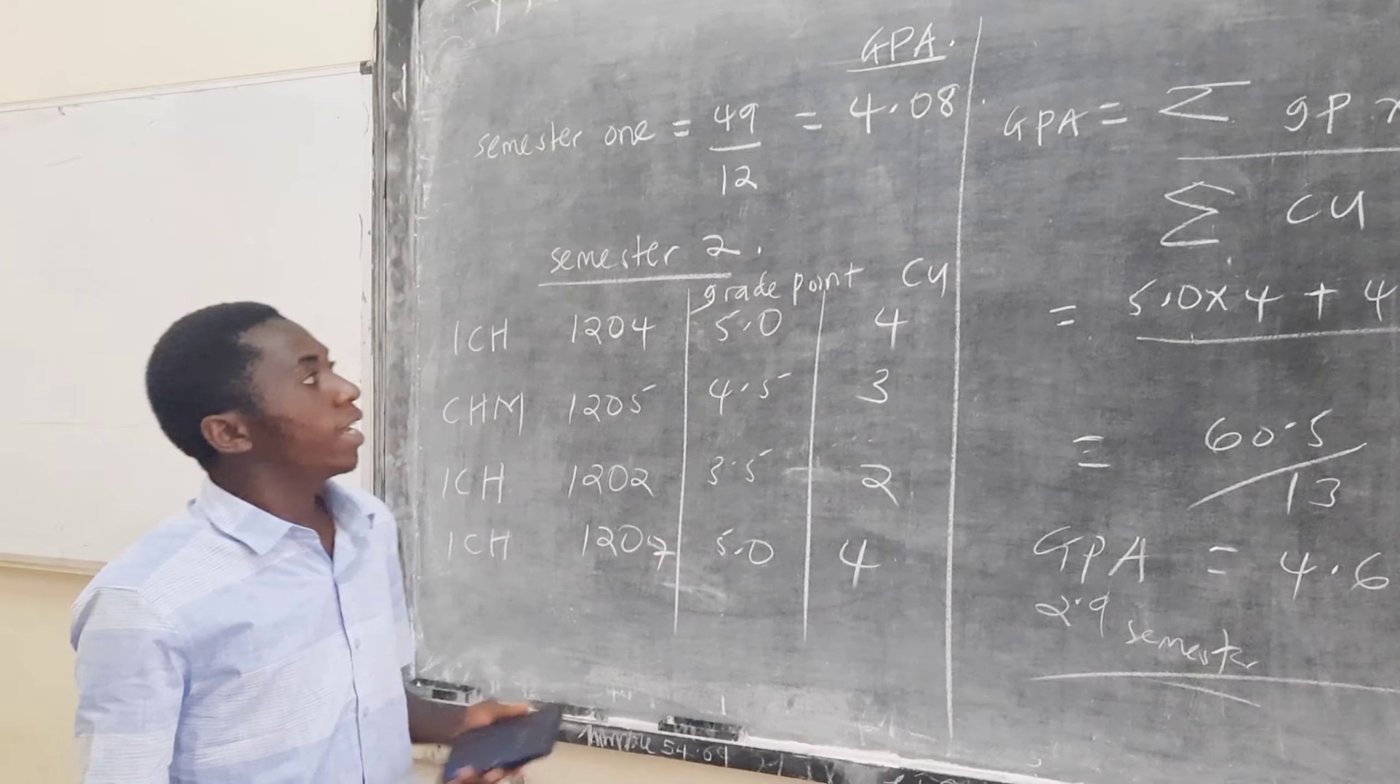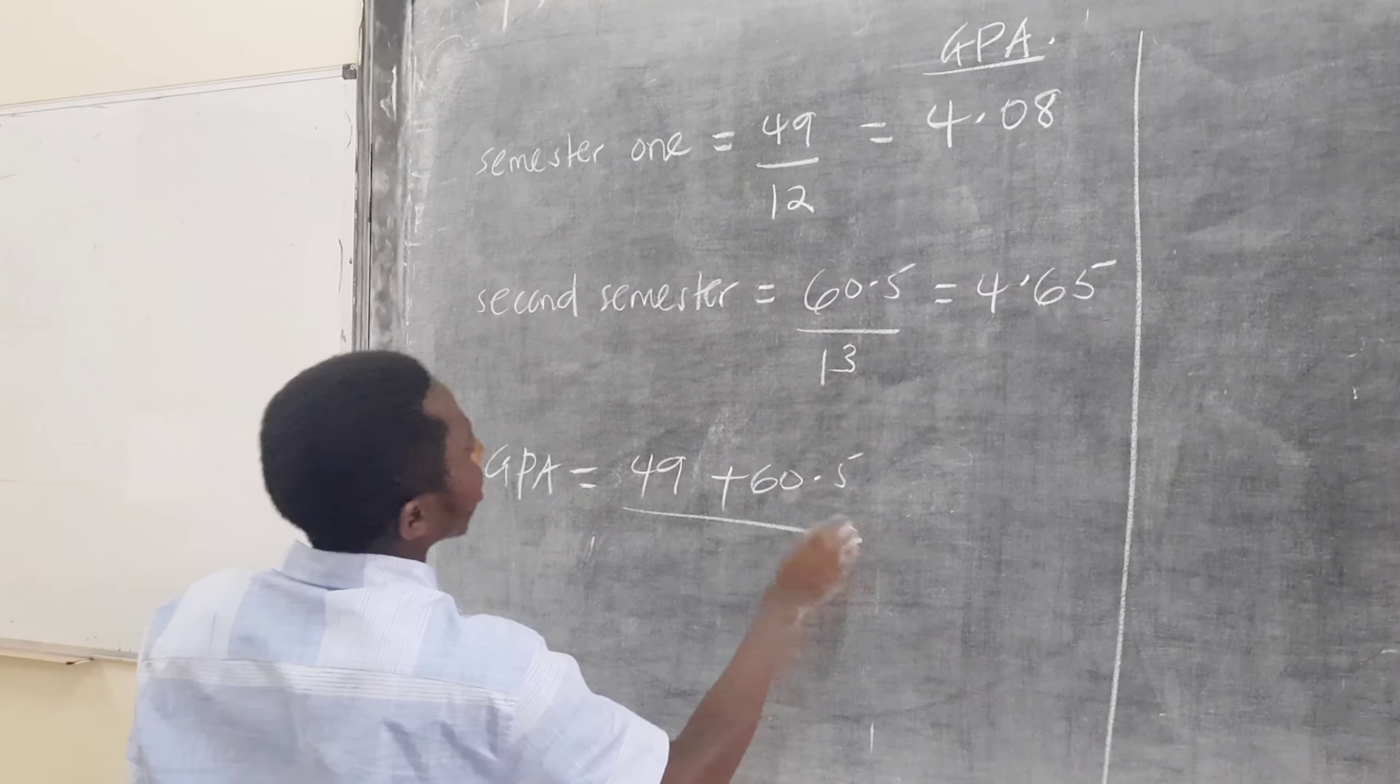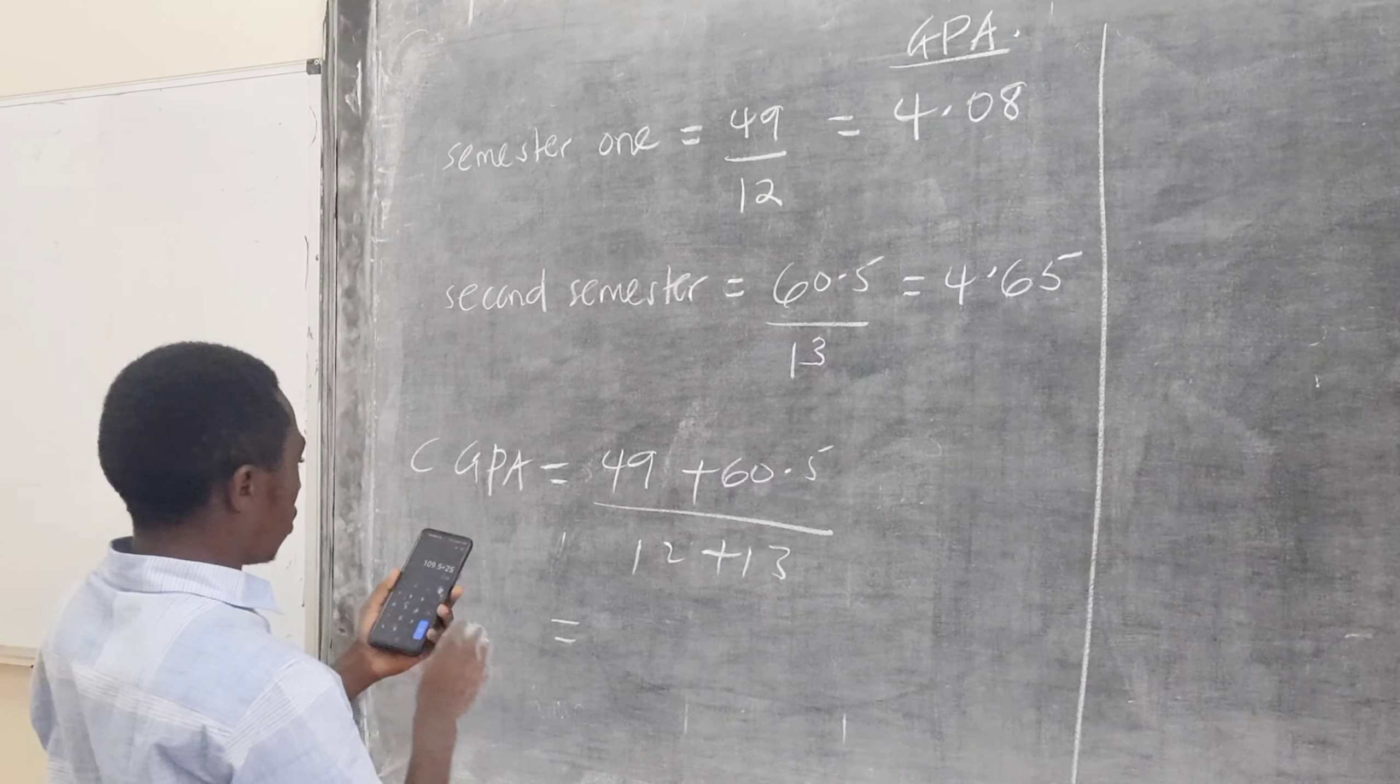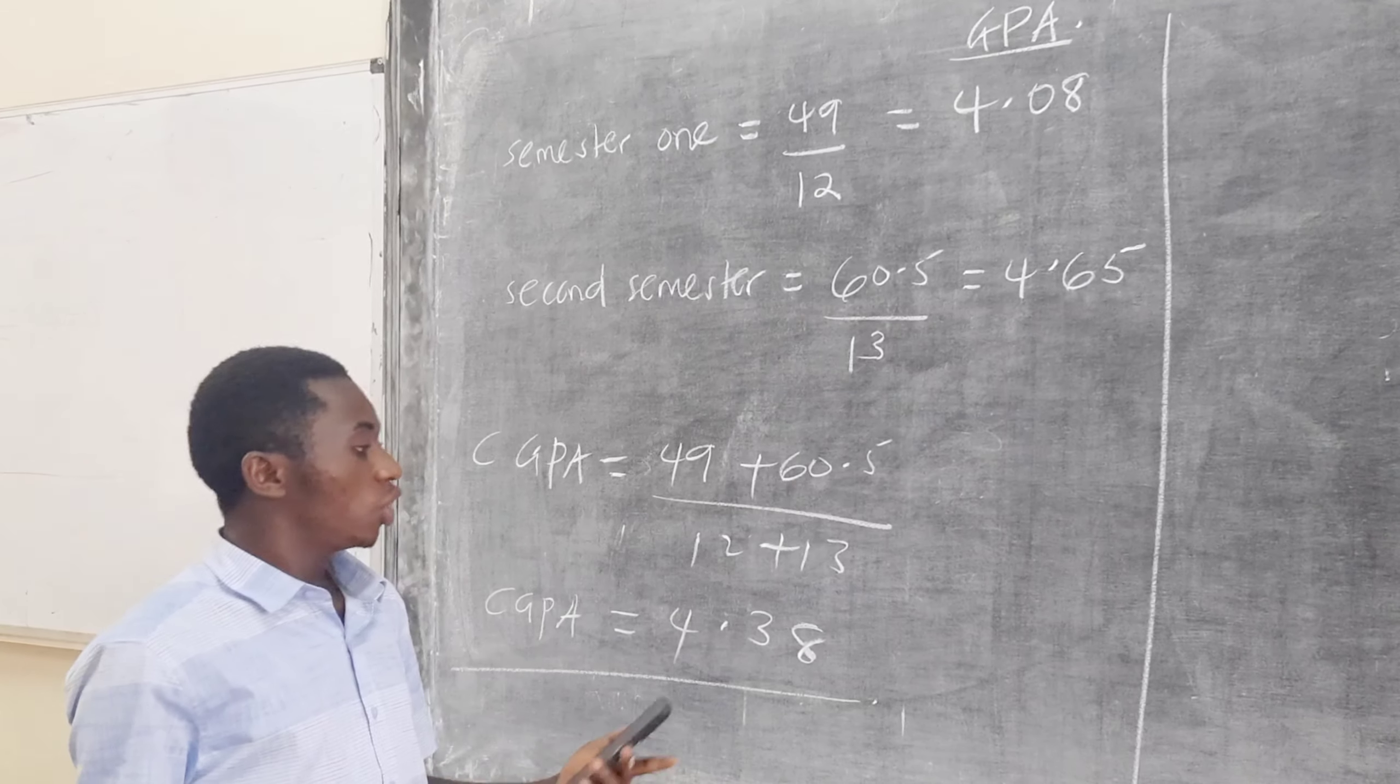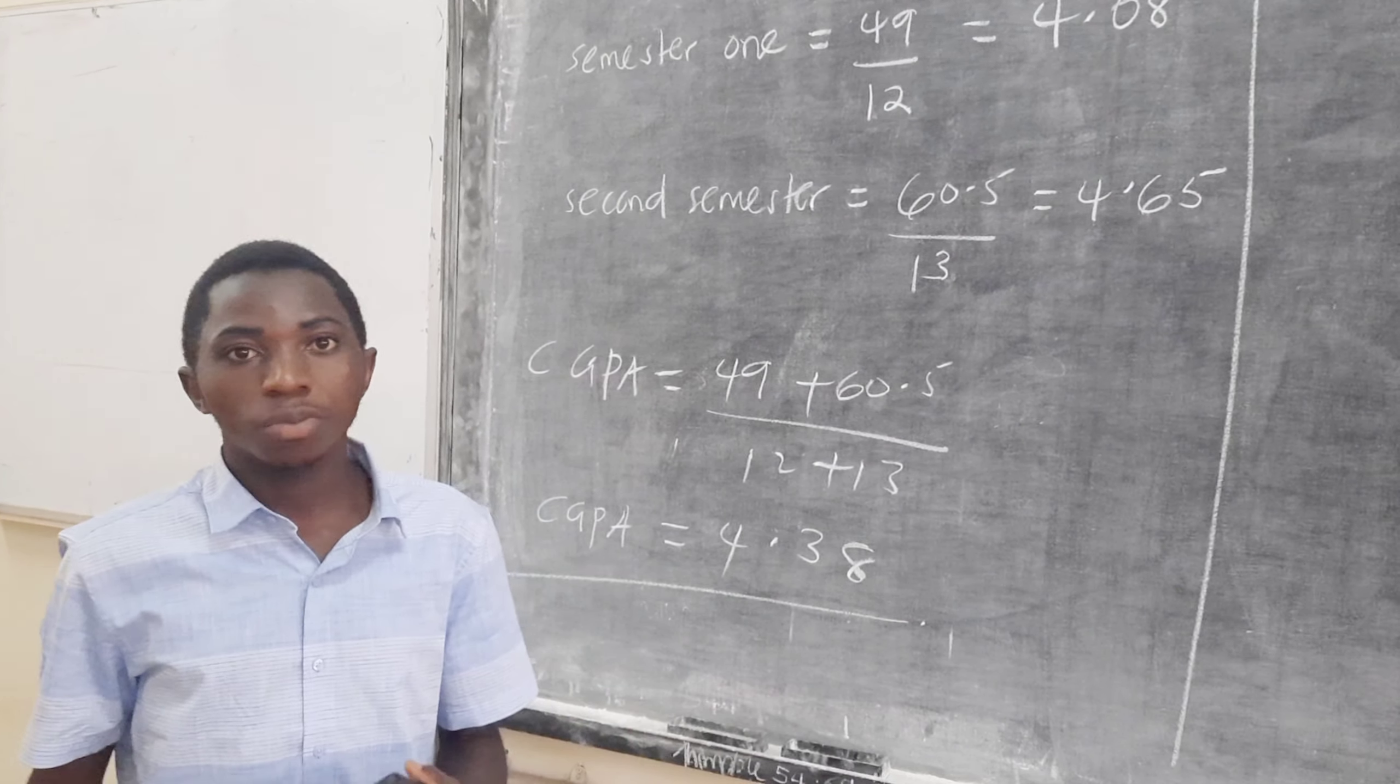The question is now how do I find the CGPA, the cumulative GPA? How do you get the CGPA? CGPA is the cumulative. For you to be able to come up with a CGPA, we shall have 49 plus 60.5 over 12 plus 13. At the end of the academic year, 60.5 plus 49 divided by 25. At the end of the academic year, you will be having a CGPA of this. That's what I want to call the cumulative assessment. One thing you should be able to note is that my CUs, total CUs, are smaller because I'm using examples. A normal course is supposed to have a minimum of 15 CUs and a maximum of around 28 CUs.